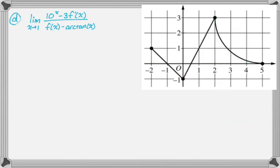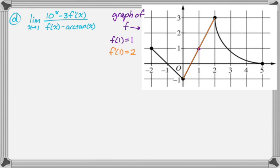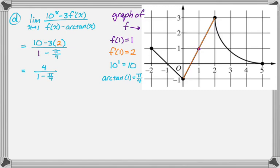Part D is a limit question. We want the limit as x approaches one of [10^x minus 3f′(x)] all over [f(x) minus arctan(x)]. The first thing to try is direct substitution. From the graph, f(1) = 1 and f′(1) = 2 (the line segment there has slope two). Also, 10 to the first is 10, and arctan(1) = π/4. Substituting in gives (10 minus 3·2) over (1 minus π/4), which is 4 over (1 minus π/4). That's not indeterminate, so the limit equals 4 over (1 minus π/4).